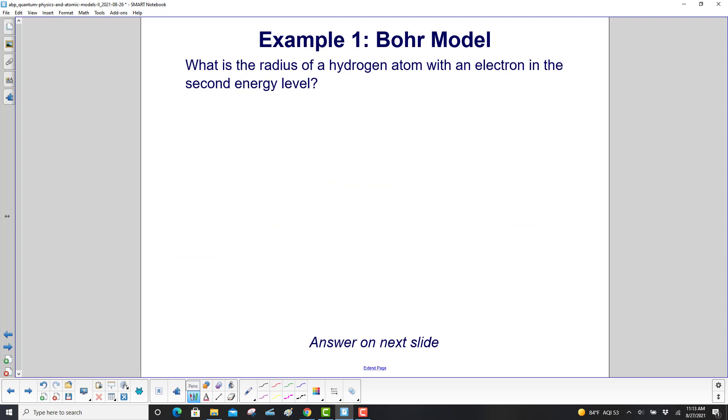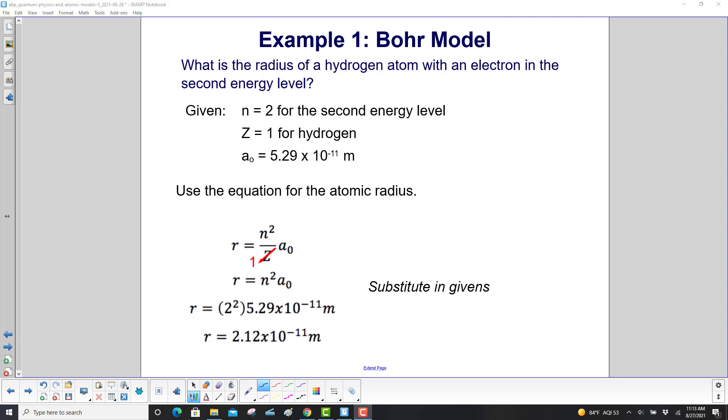Example one, what is the radius of a hydrogen atom with an electron in the second energy level? We start with n equals two for the second energy level, z equals one for hydrogen. We didn't give that, so you can look that up on a periodic table or just realize hydrogen is the first atom. And here's our Bohr radius. We use the equation for the atomic radius, which is n² over z times a₀, where a₀ is the Bohr radius. z equals one, so we're left with r is n²a₀. Plug in our numbers and we get the radius is 2.12 times 10⁻¹¹ meters.